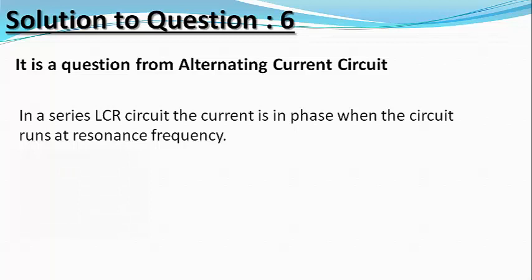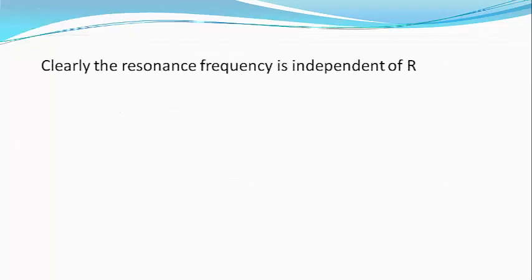Therefore, the resonance frequency omega r can be calculated using omega L equals 1 by omega C or omega square equals 1 by LC. Very clearly, the resonance frequency is independent of the resistance R and hence option A is correct.